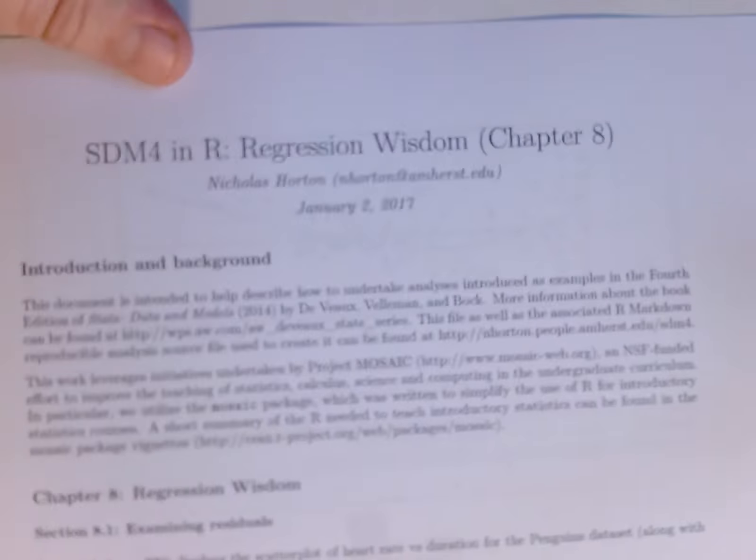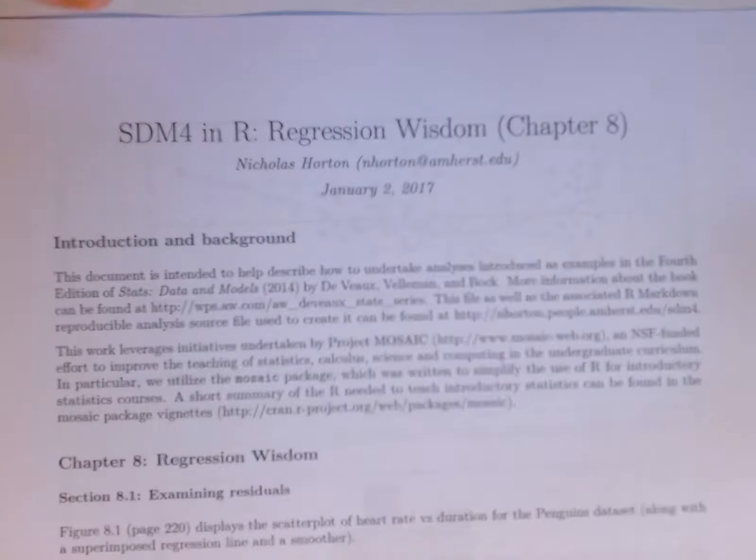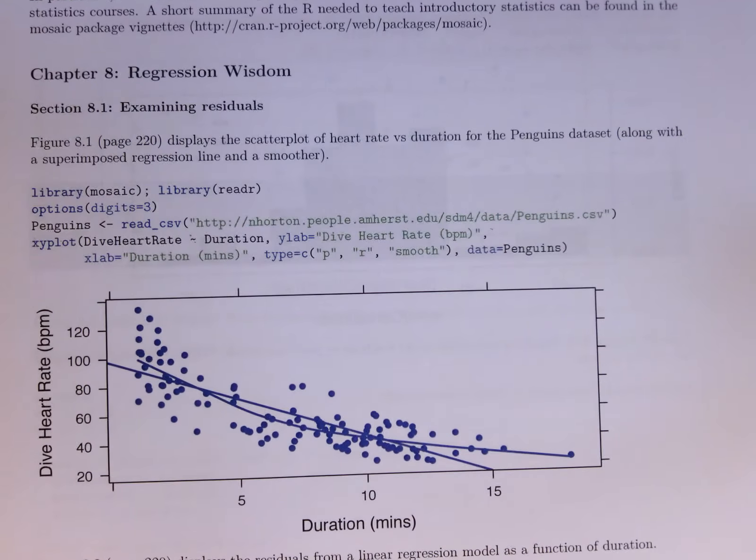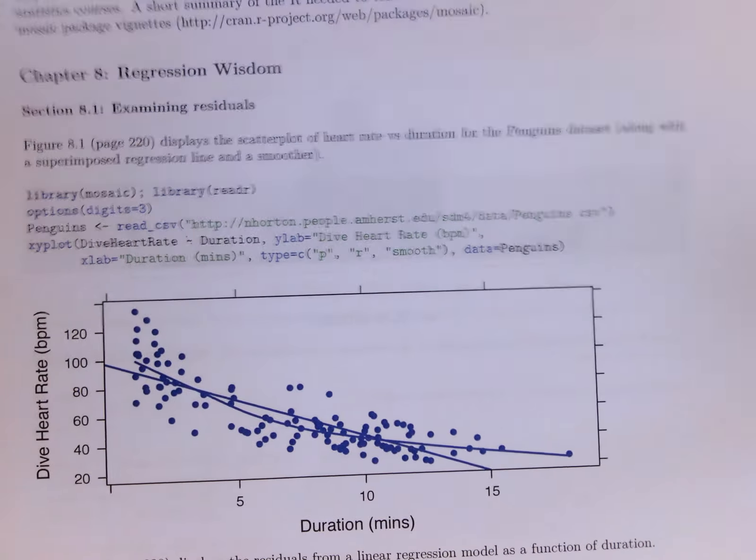There's not a lot new here in the SDM 4 and R materials that we've also made available. We have the idea of the scatter plot. We've added in here, as you can see, a smoother. So by saying type equals P, R, and smooth, gluing those together with the C function, the concatenate function, we actually get the sense of the scatter plot smoother here, and we can see that the straight line and that curved line don't really correspond to each other. There seems to be a pronounced curve to this, which is what the book talks about on page 220.